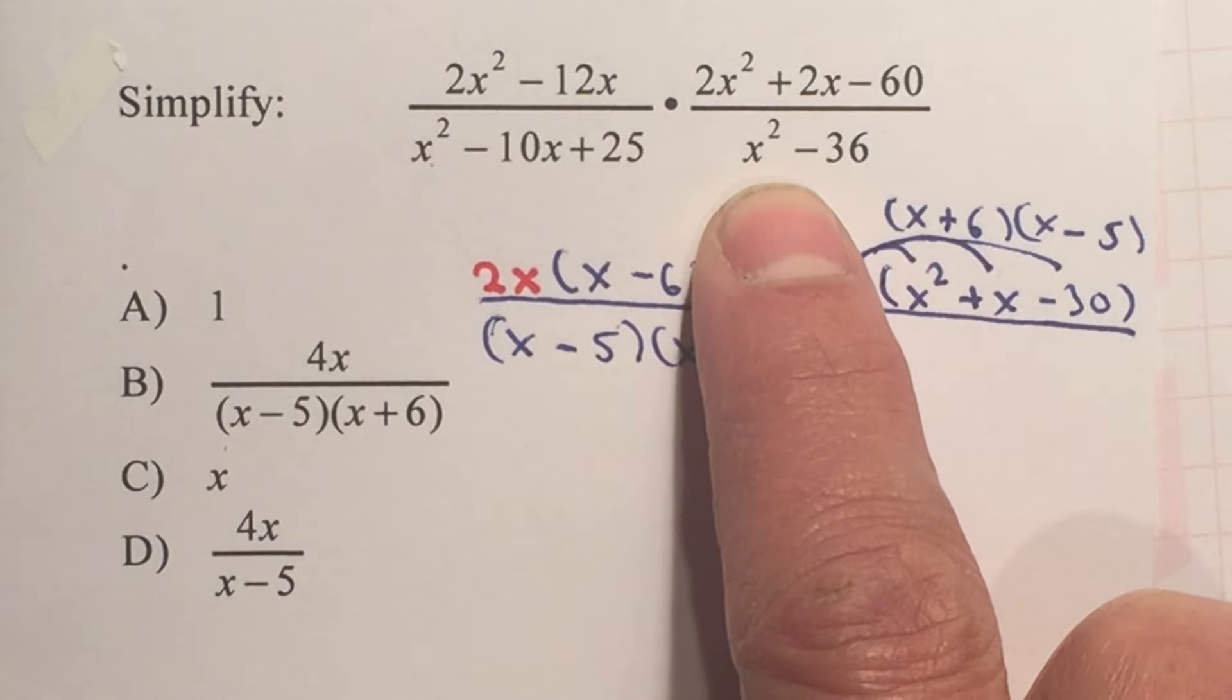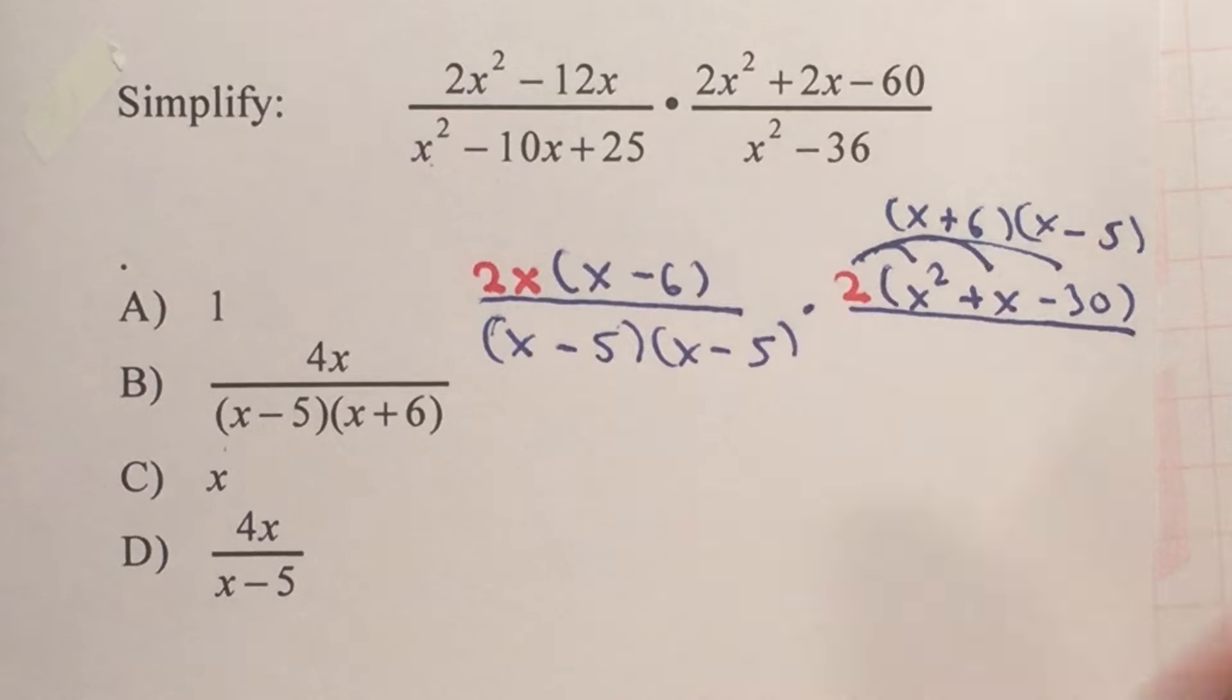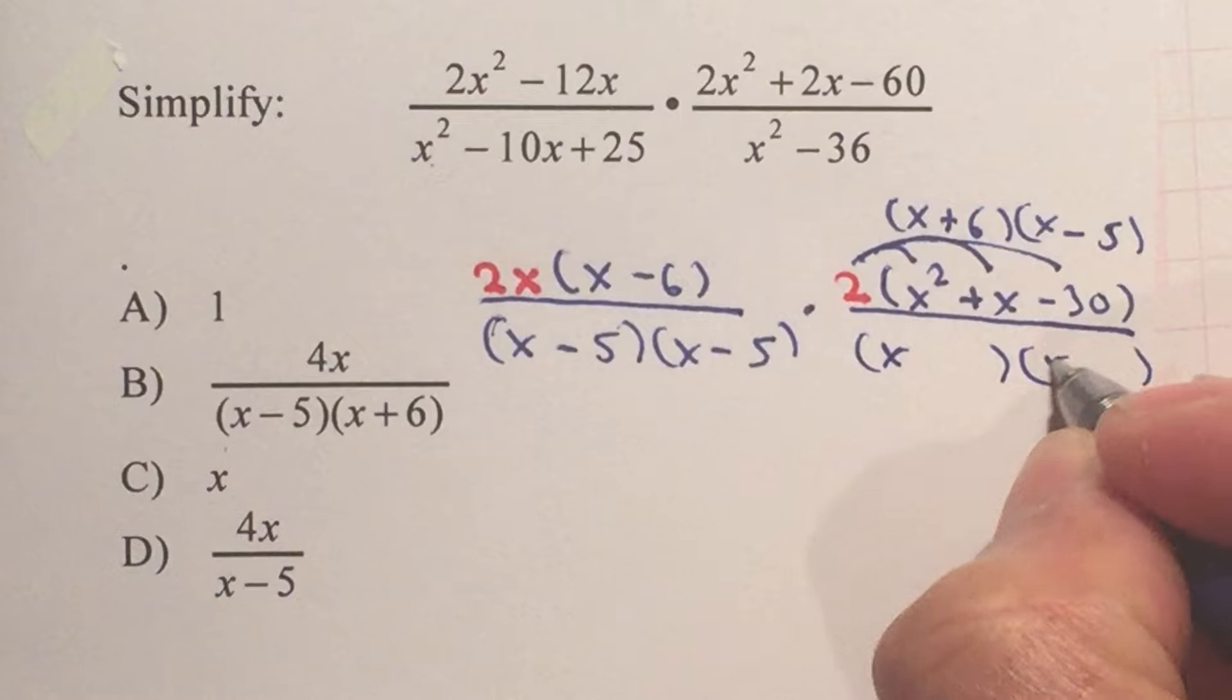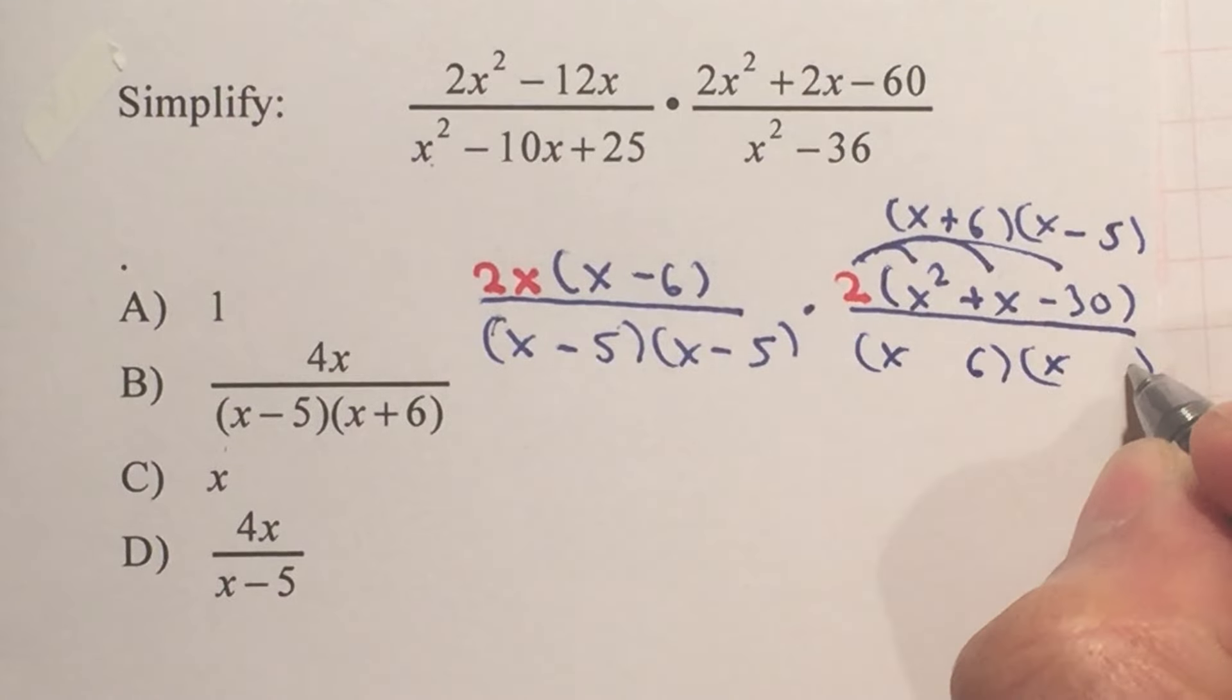The denominator, this is called the difference of two squares. So double parentheses, x and x. Factors of 36, 6 and 6. One negative, one positive. x minus 6, x plus 6.